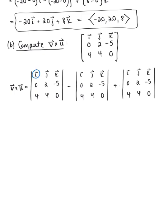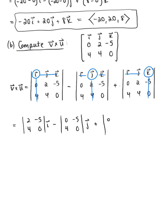Now we need to find the submatrix for each of the standard unit vectors. We do this by eliminating the adjacent row and column for each of our standard unit vectors. This leaves us with the 2 by 2 determinant, 2, negative 5, 4, 0, i hat, minus the 2 by 2 determinant of 0, negative 5, 4, 0, j hat, plus the determinant of the submatrix, 0, 2, 4, 4, k hat.